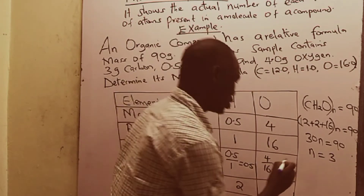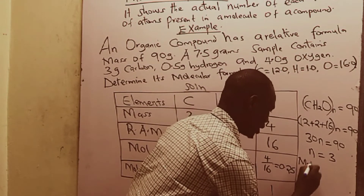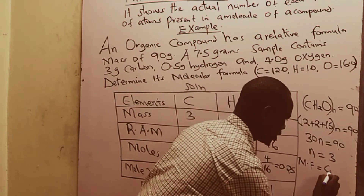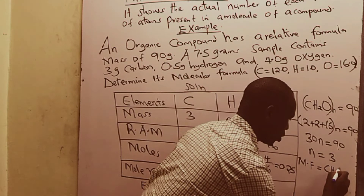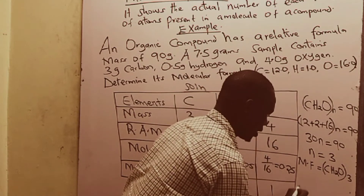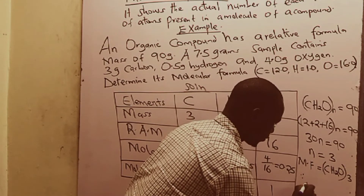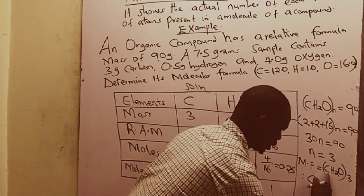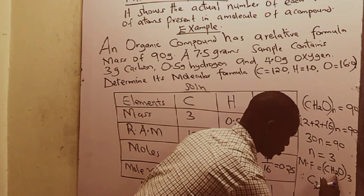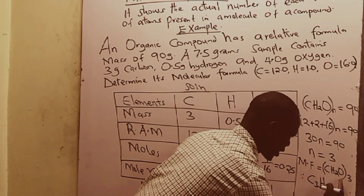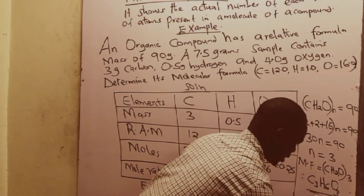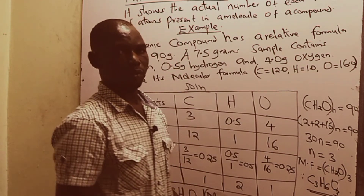So to get the molecular formula, we take the empirical formula CH₂O and multiply by N, where N is 3. Therefore, our molecular formula is: C times 3 gives C₃; H₂ times 3 gives H₆; and O times 3 gives O₃. So the molecular formula is C₃H₆O₃. And that is the answer to that question.